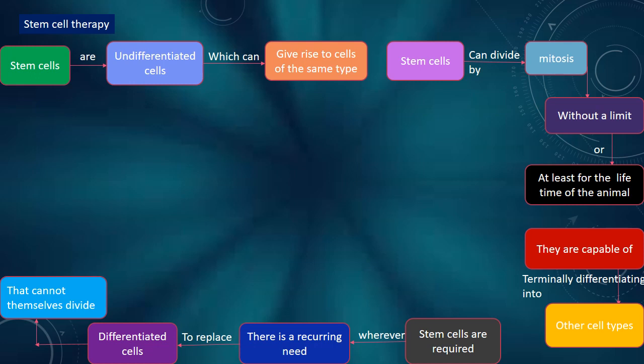They are capable of terminally differentiating into other cell types. Stem cells are required wherever there is a recurring need to replace differentiated cells that cannot themselves divide.